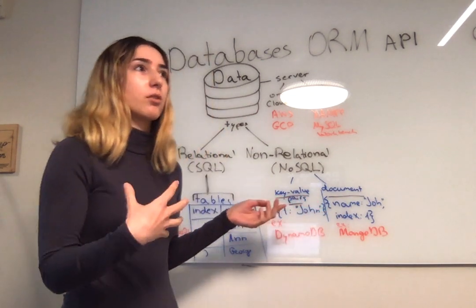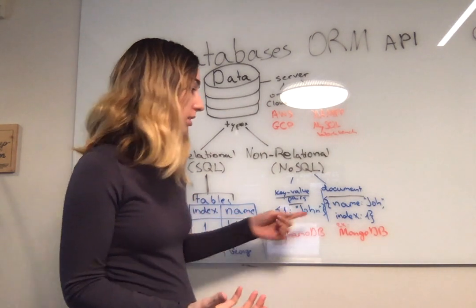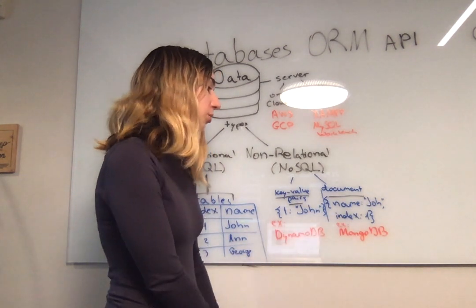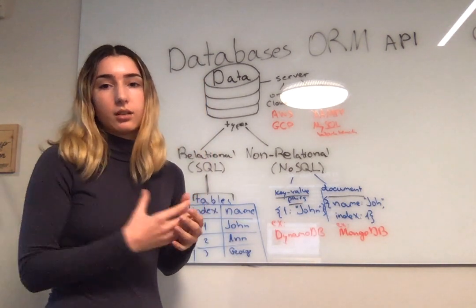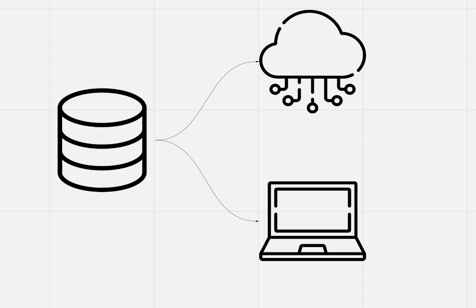There's also the document type, which stores data as documents — like a JSON object. An example of data returned in this format would look like a JSON object, and one of the popular ones is MongoDB. As for where databases live, they usually live on some kind of server, which could be stored in the cloud using providers like AWS or GCP, or for testing purposes you can store the data locally on your computer and run it using something like XAMPP for SQL databases or MySQL Workbench.